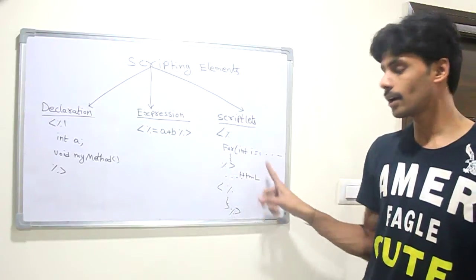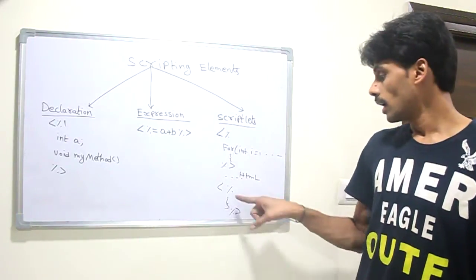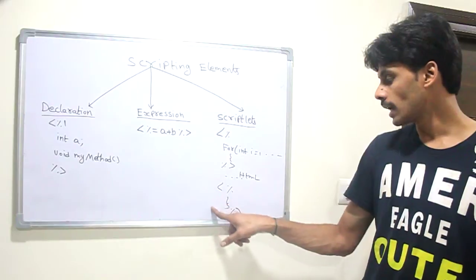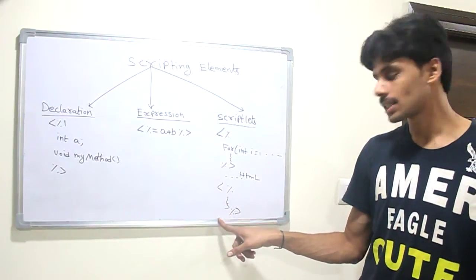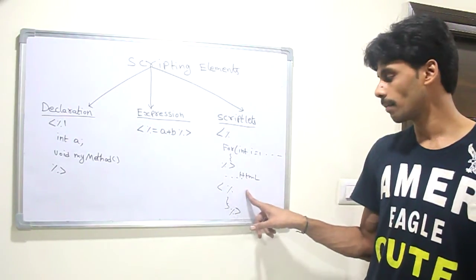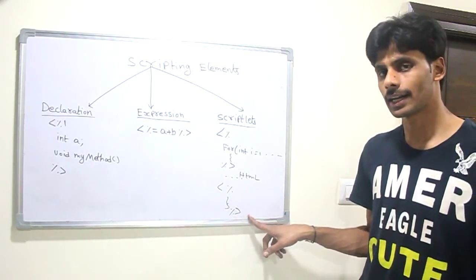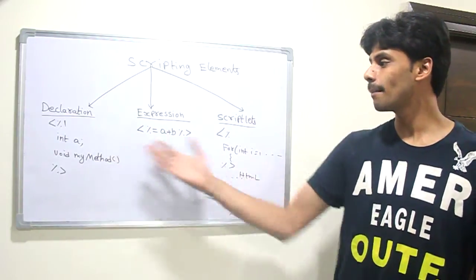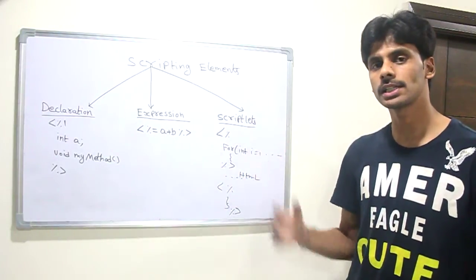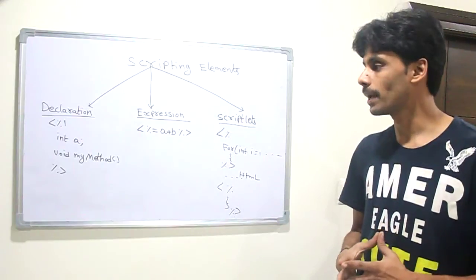Then I write all the HTML that should go into that loop. And then I close the for loop using another scriptlet, starting with less-than symbol percentage and ending with percentage greater-than symbol. So we can have any number of expressions and scriptlets within our JSP page.